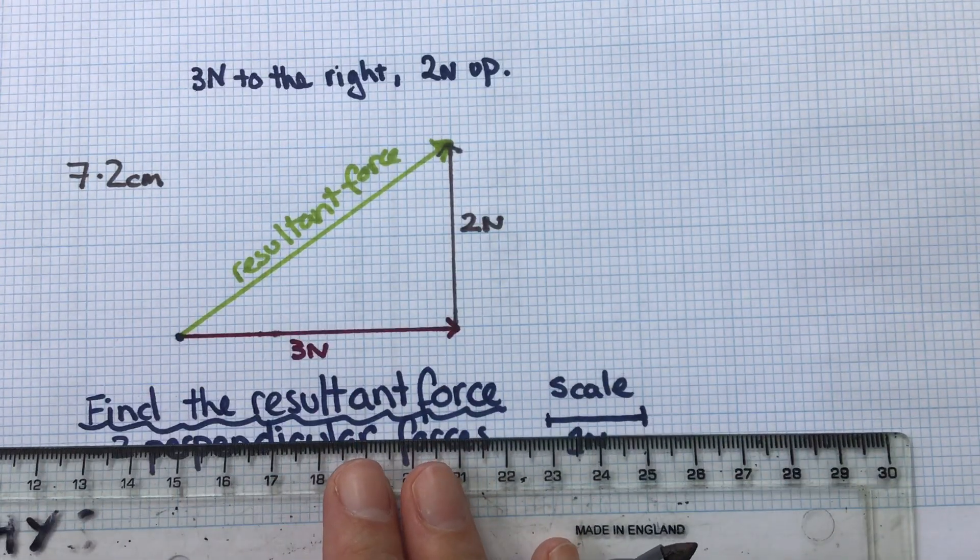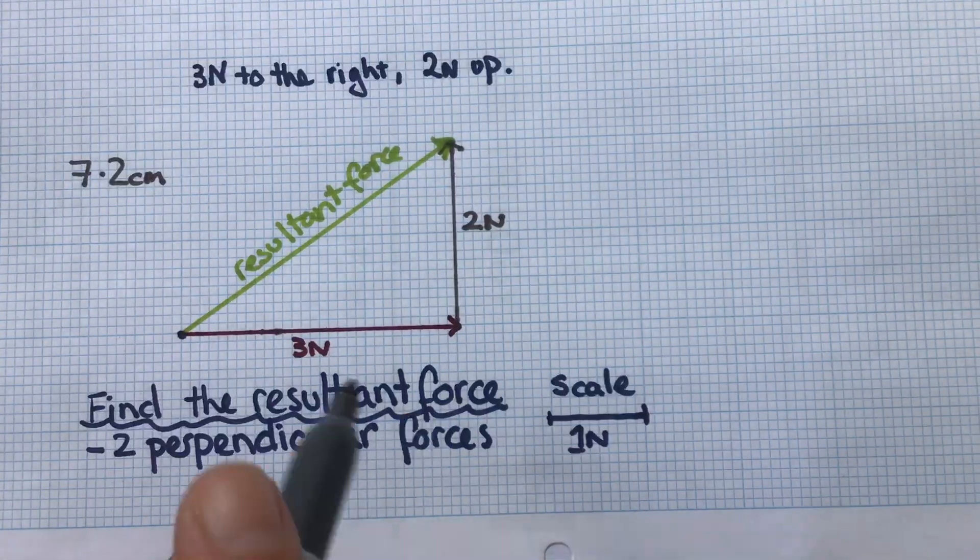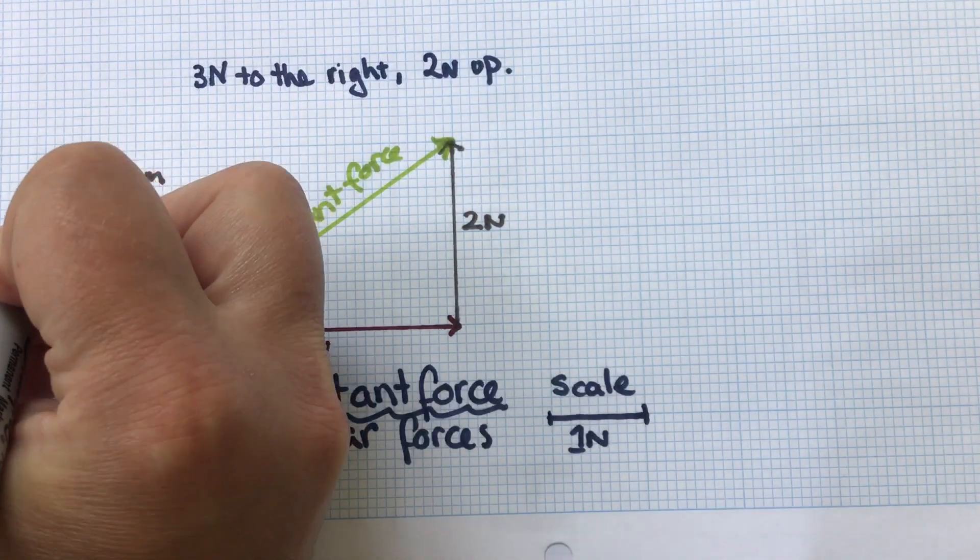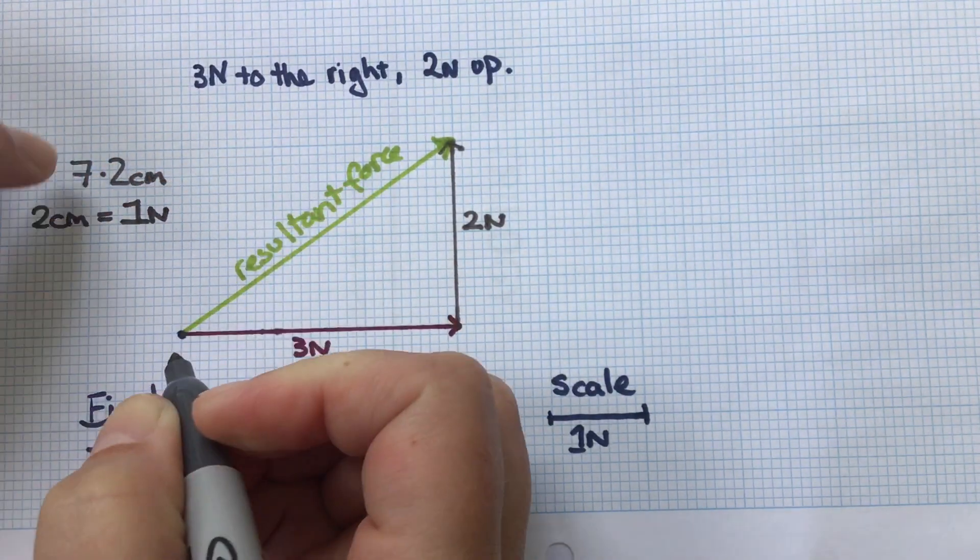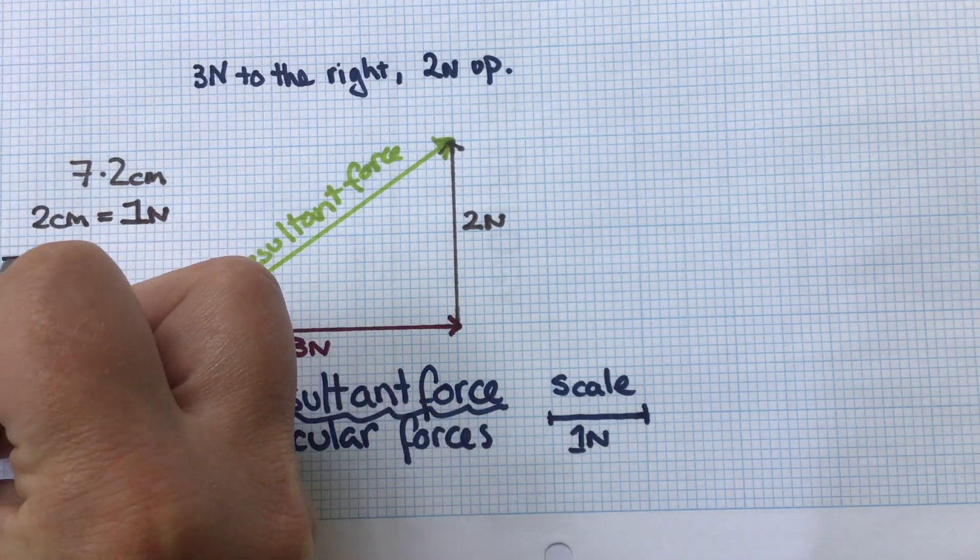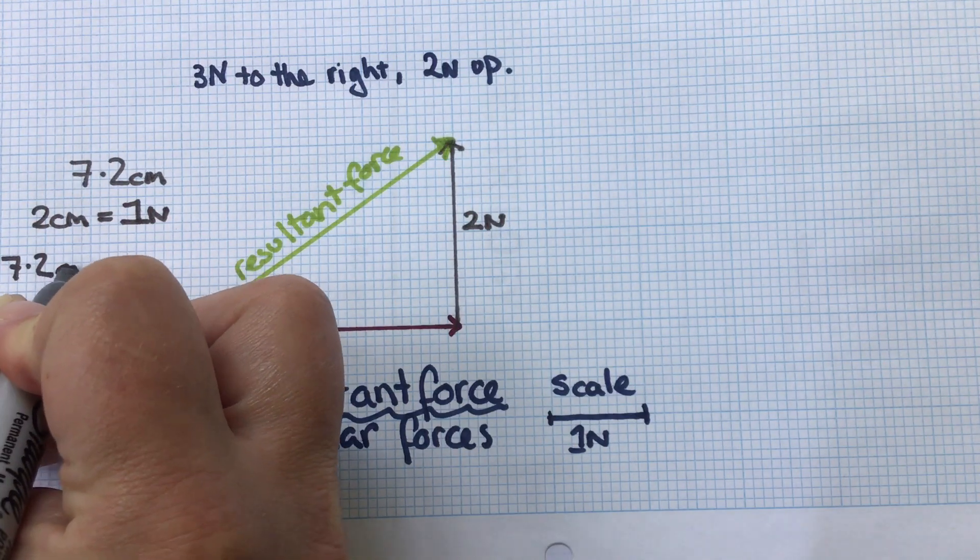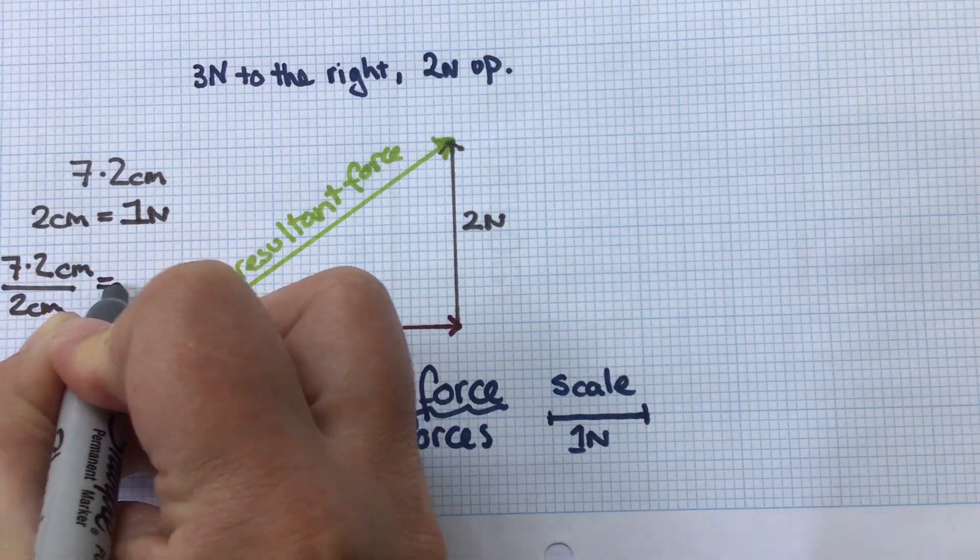One big square is 2 centimeters. So if 2 centimeters is equal to 1 newton, I then need to work out how many newtons this is. So I'll do 7.2 centimeters divided by 2 centimeters, and that should tell me how many newtons I will get.